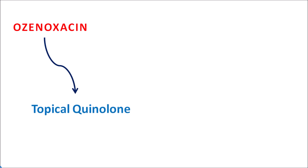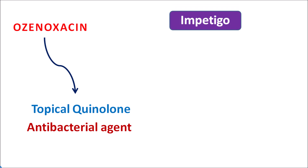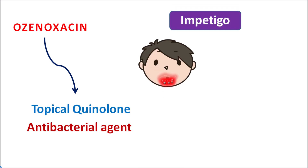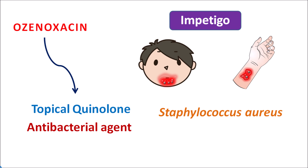What is this drug ozenoxacin? This is one of the topical quinolone antibiotics and this drug acts as an antibacterial agent. Particularly it can be used in the treatment of impetigo, where skin blistering, skin eruptions and reddening of the skin can be observed at different parts of the body including the face and arms because of bacterial infections. Two important bacteria are mainly responsible for induction of impetigo: staphylococcus aureus and streptococcus pyogenes. So impetigo is a skin disorder due to bacterial infection which can be treated by ozenoxacin.